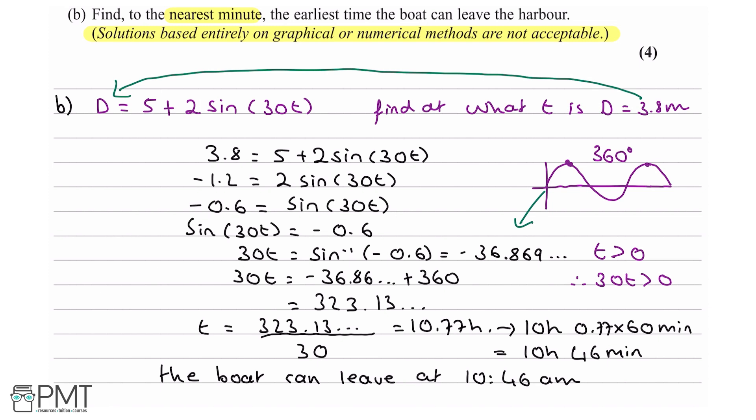So we say the boat can leave at 10:46 a.m. Now, an important point to note here is technically at 10:46, the depth isn't exactly 3.8, it's still not there yet. But the question asked us to round it to the nearest minute. So as long as you're between 10:46 and 10:47, if you wrote either one of those answers, that's correct. Because technically 10:47 is the first minute at which the depth is above 3.8. But with the numbers we've been given, it rounds to 10:46 a.m. So the mark scheme allows both.